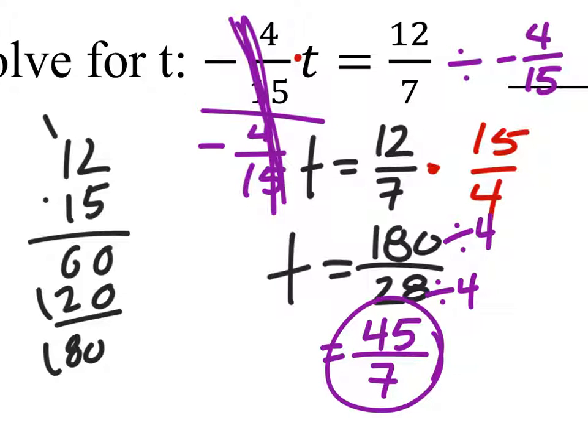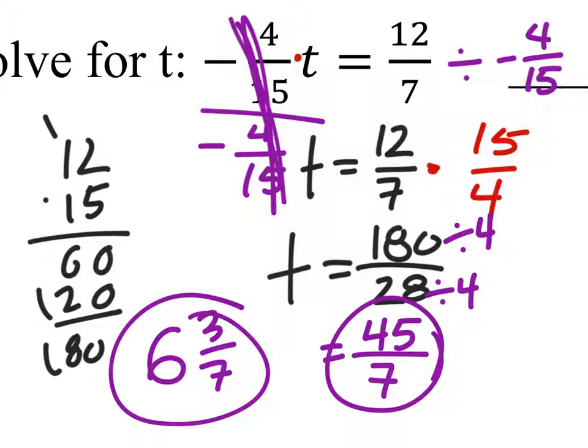Again, you could change this into its mixed number, which would be six and three-sevenths. That one works as well. But this is our t value.